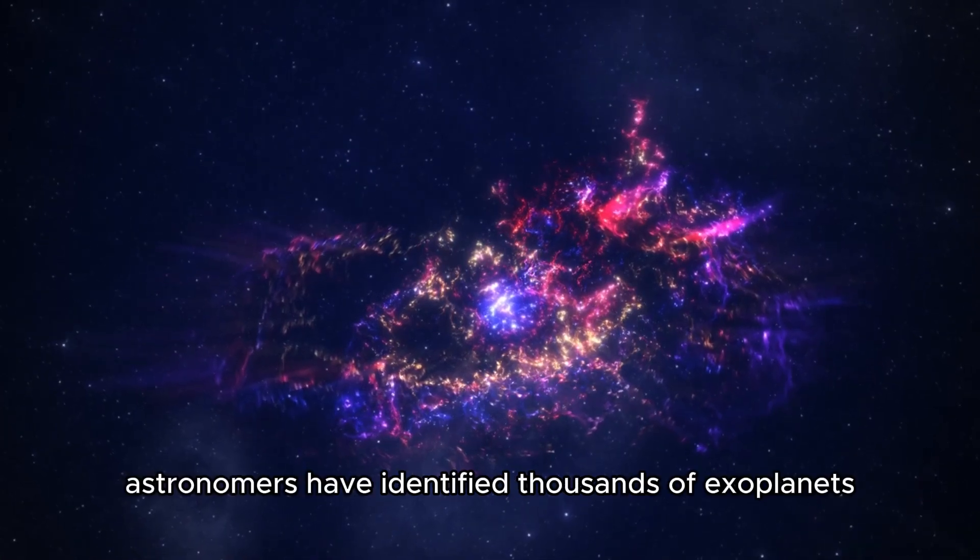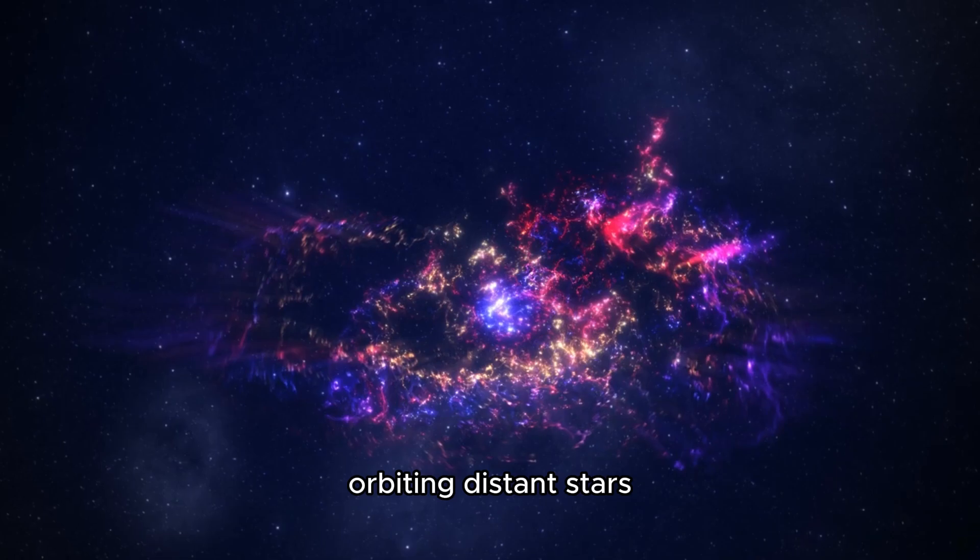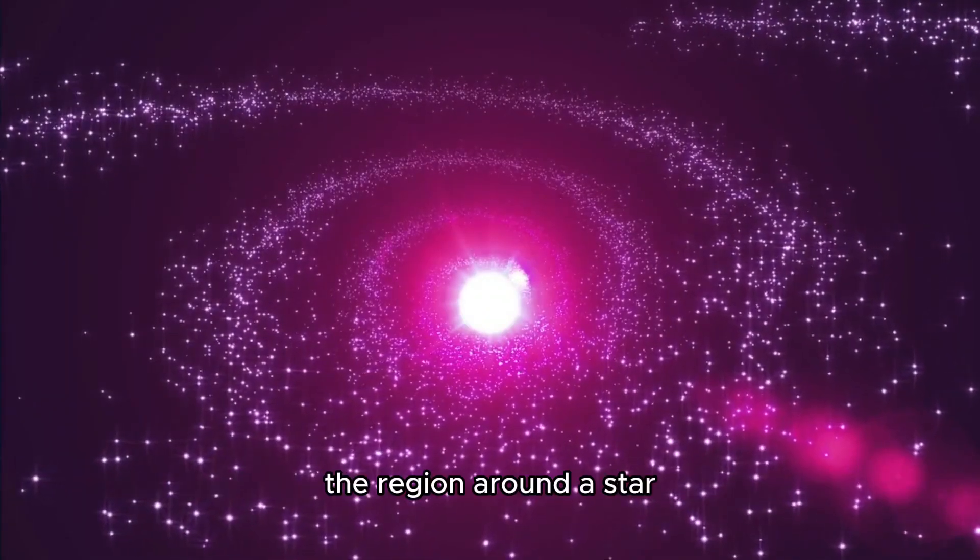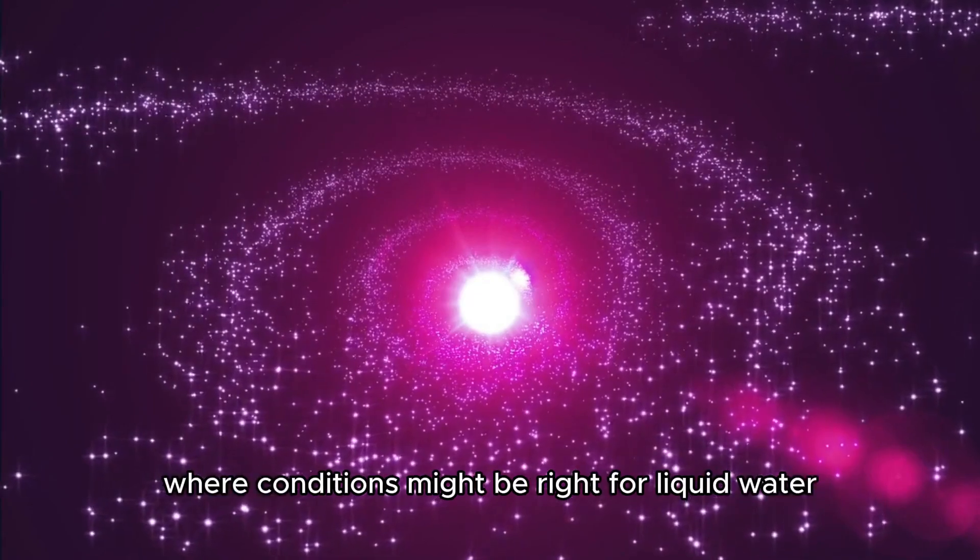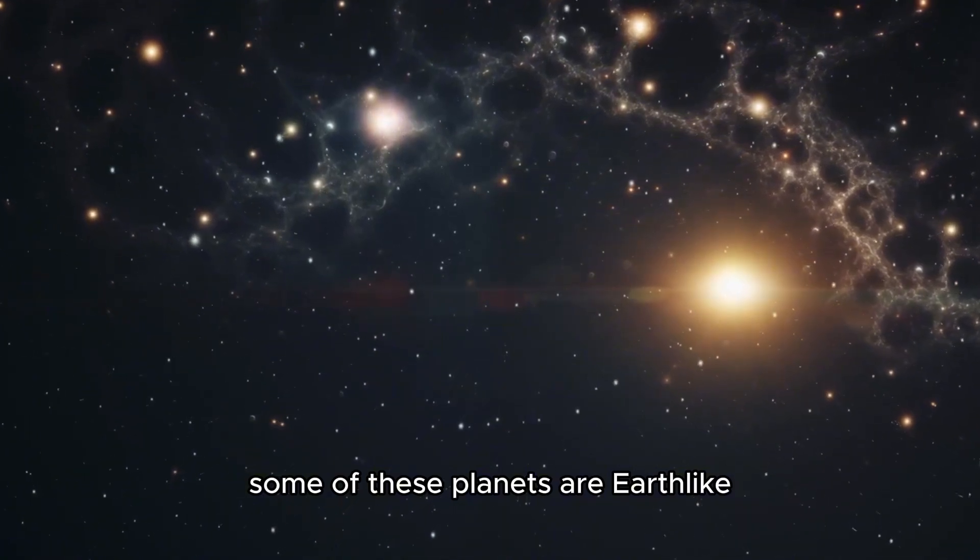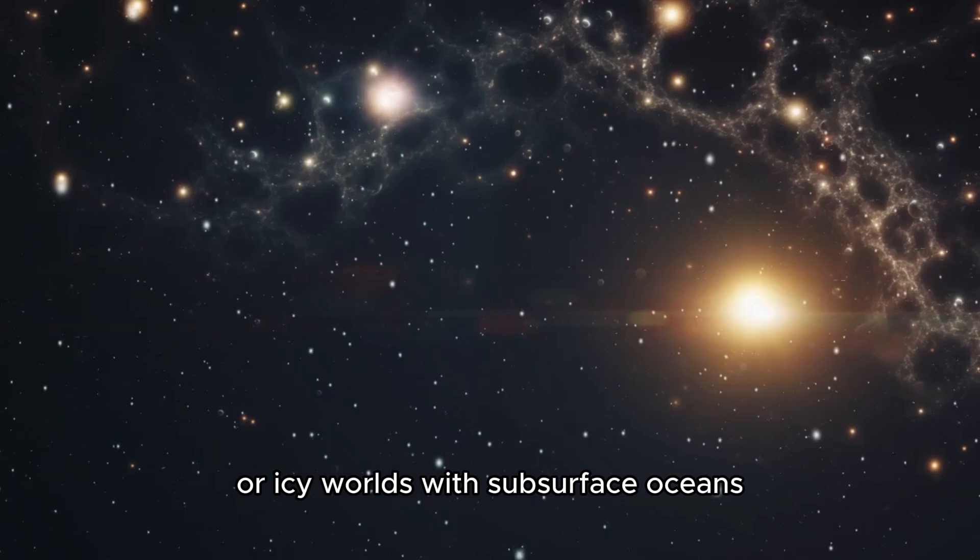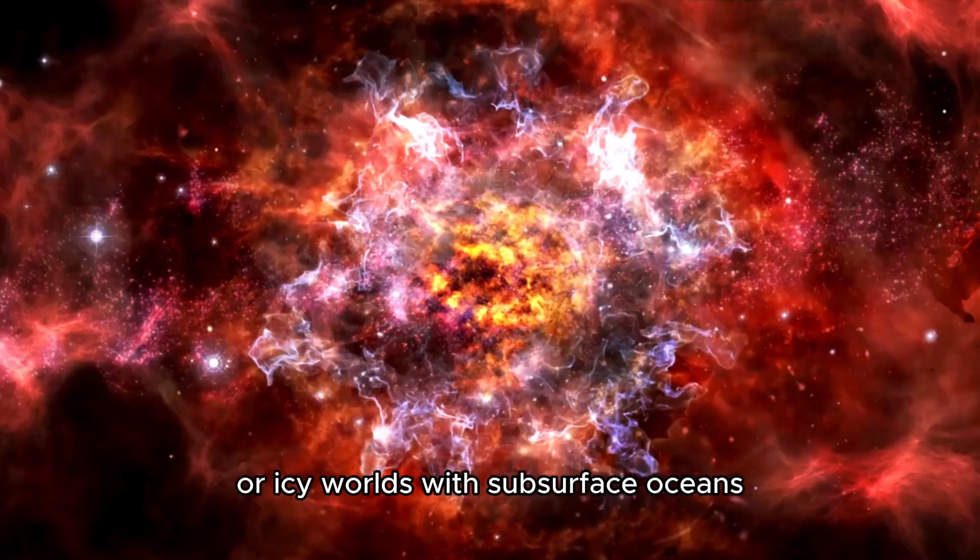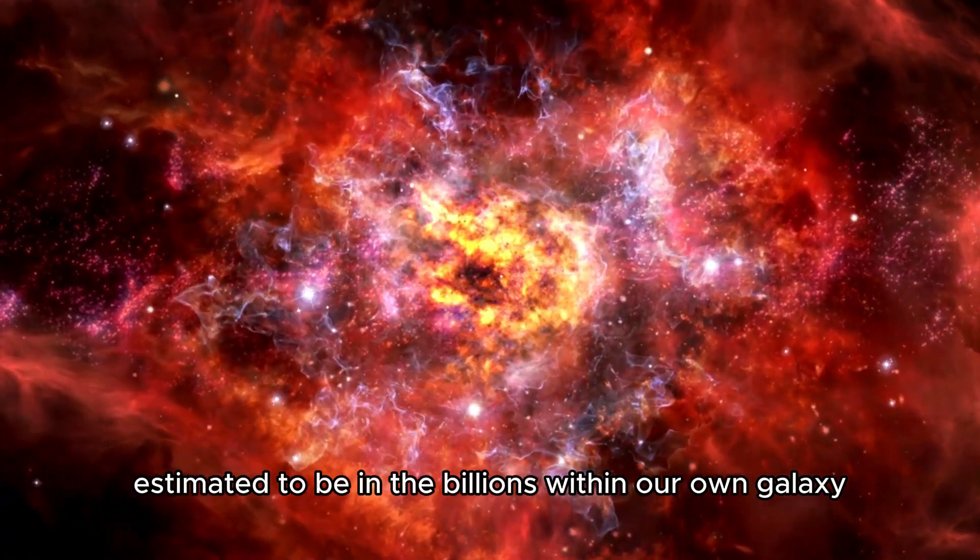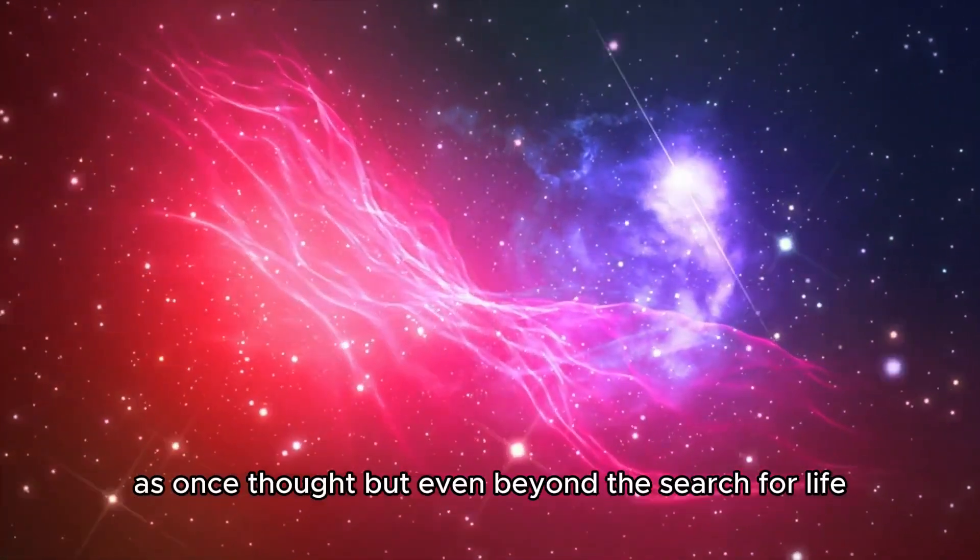In recent years, astronomers have identified thousands of exoplanets orbiting distant stars. Many of these planets exist within the habitable zone, the region around a star where conditions might be right for liquid water and potentially life to exist. Some of these planets are earth-like in size and composition, while others are gas giants or icy worlds with subsurface oceans. The sheer number of these planets, estimated to be in the billions within our own galaxy, suggests that the conditions for life may not be as rare as once thought.